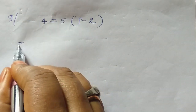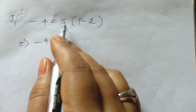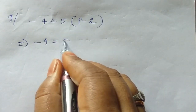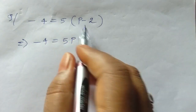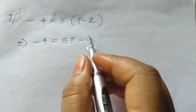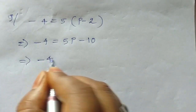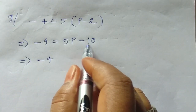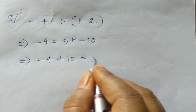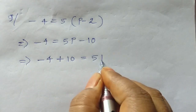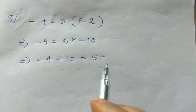So we will go to the table. Minus 4 equal to, and we will add the table. 5 into p, 5p. And we will add plus and minus minus, minus 5. 2 equal to minus 4, and we will add minus 10. Plus 10 equal to 5p.